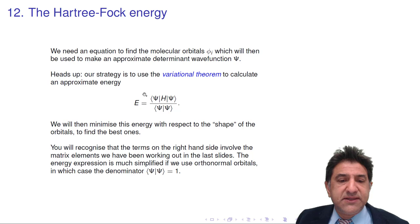So you'll recognize that the terms on the right-hand side, on the bottom we have the overlap here, which we worked out. And if we use orthonormal orbitals, this overlap here will be one. That's fantastic. So we can get rid of that.